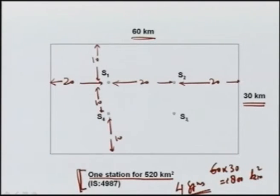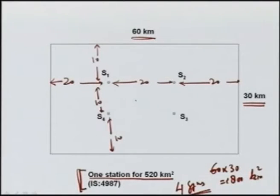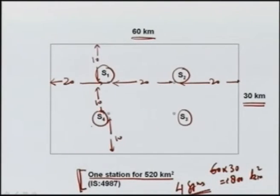Once we have put these 4 stations, we have to see whether they are adequate or not. We will collect data for a few years and analyze the data to see what is the variance or typical variation within these stations. For example, are the rainfalls at S1, S2, S3, and S4 very similar, or is there a wide variation? So for this, we need to analyze.